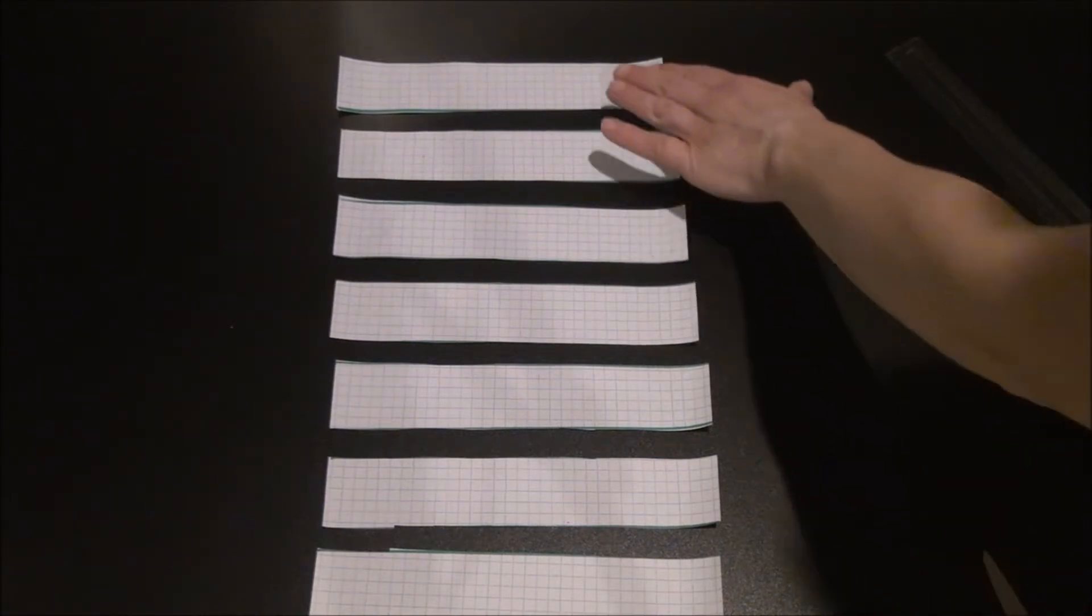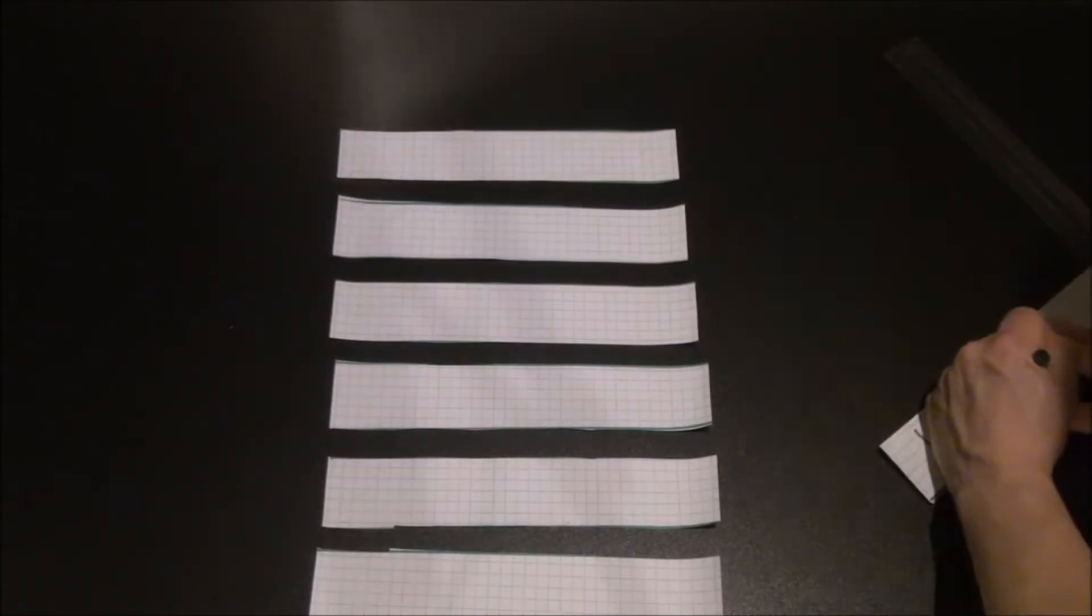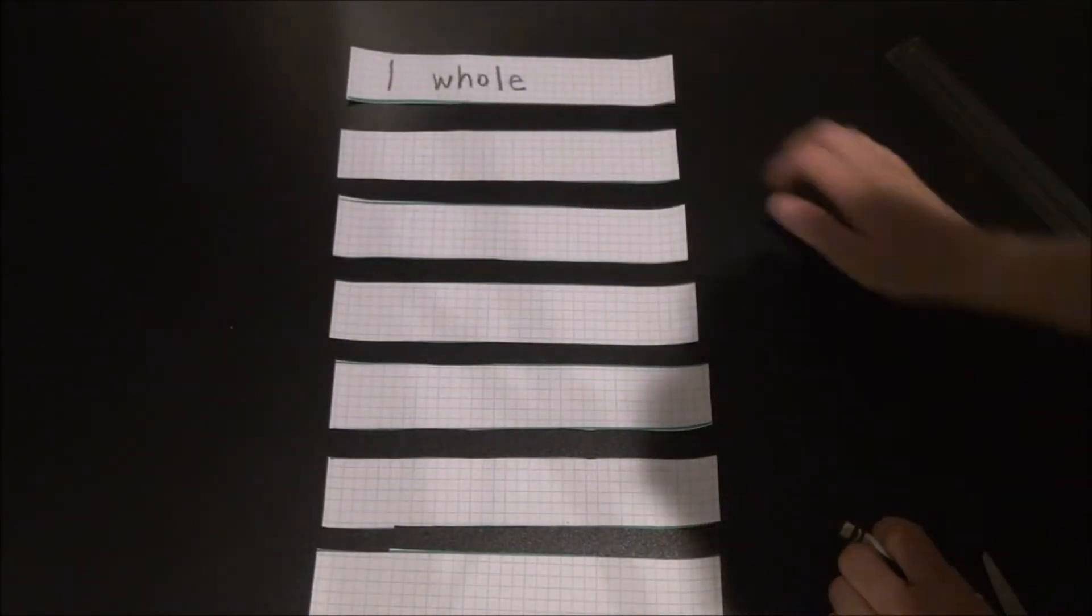Now that I have my strips, I'm going to use these to represent different fractions. We won't use all of these to solve the Jackson and Reagan problem, but we will use these today and again tomorrow to solve other problems. This first strip right here will represent one whole. So I have written one whole on that strip.